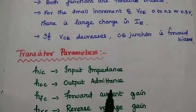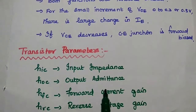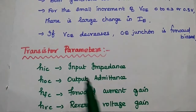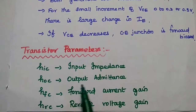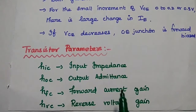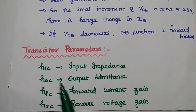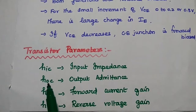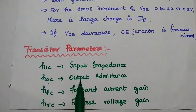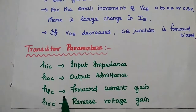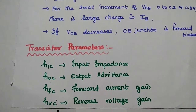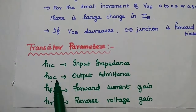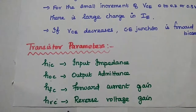For transistor parameters, hybrid or H parameters are used to analyze transistor performance. These are: input impedance (hI), output admittance (hO), forward current gain (hF), and reverse voltage gain (hR). The subscript C represents the common collector configuration.